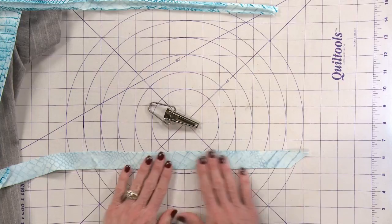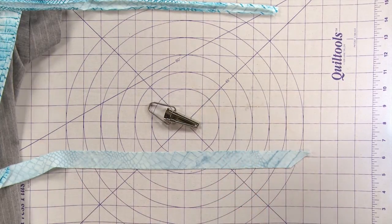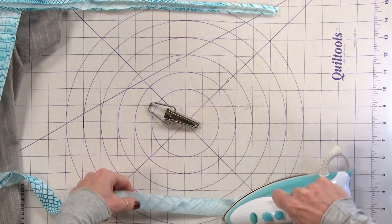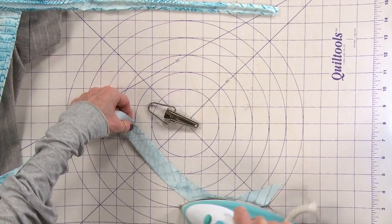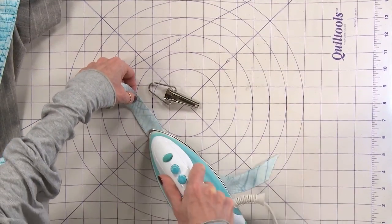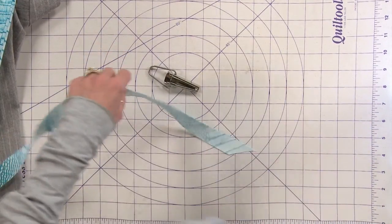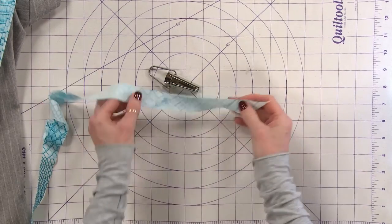The bias tape, or whenever you cut this, it needs to be cut on the bias. And I'm going to show you one of the nice things about this is if you take your iron and you turn this, it actually has a curve to it.